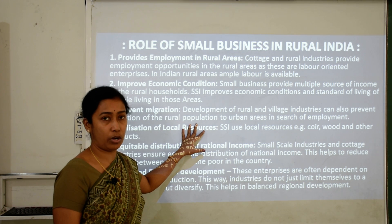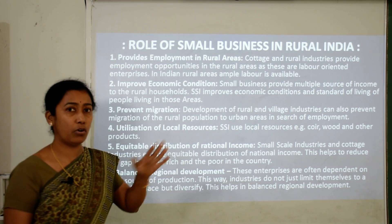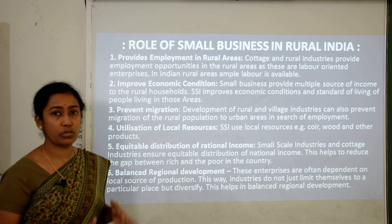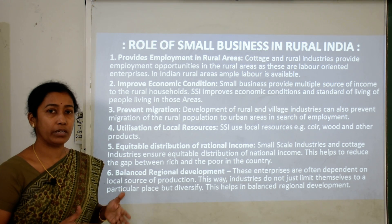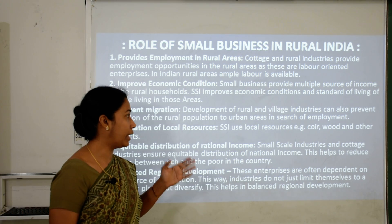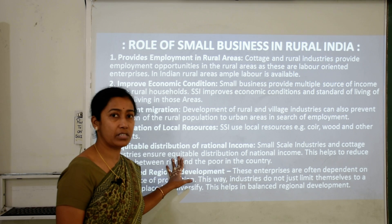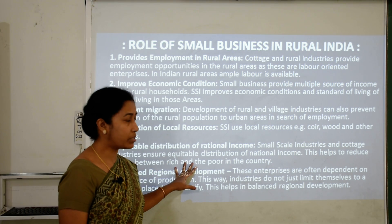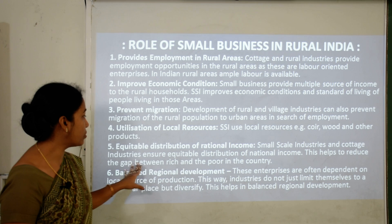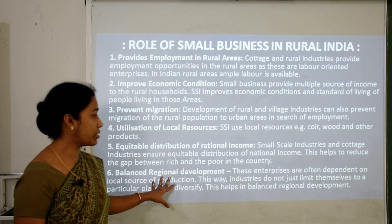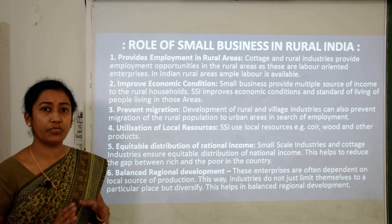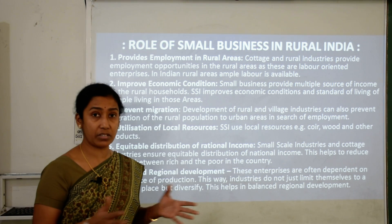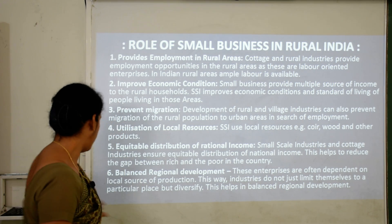People can get jobs while living in their own area and will not migrate to urban areas. Fourth is utilization of local resources — natural resources available in rural areas, like coal and wood, can be properly utilized. Fifth is equitable distribution of national income — small scale and cottage industries ensure equal distribution of national income, helping to reduce the gap between rich and poor. Sixth is balanced regional development — differences between regions in terms of development can be reduced.